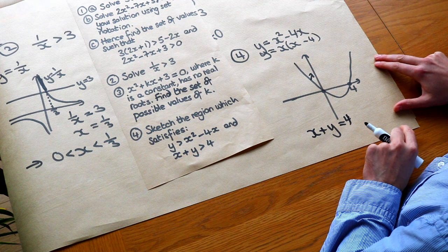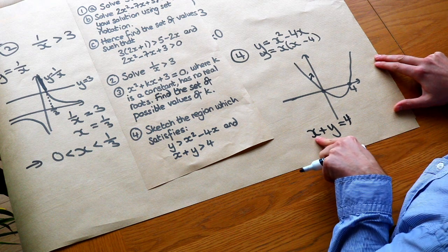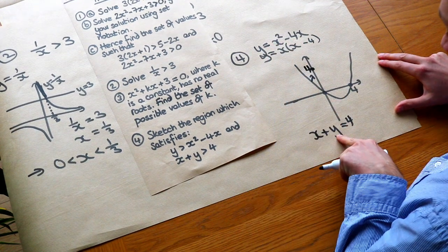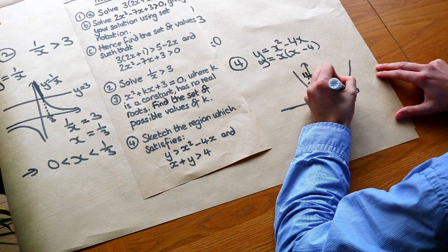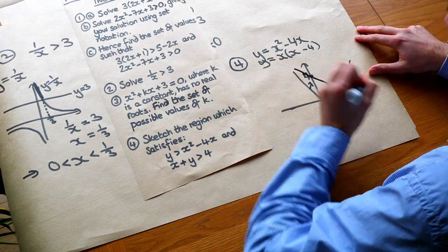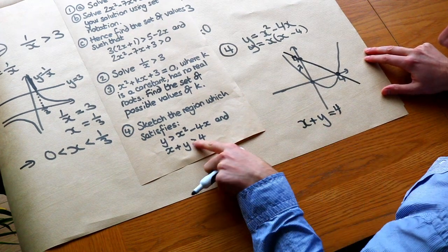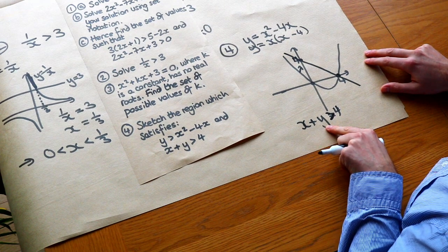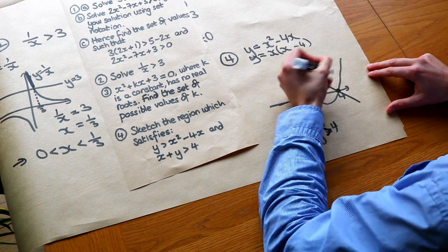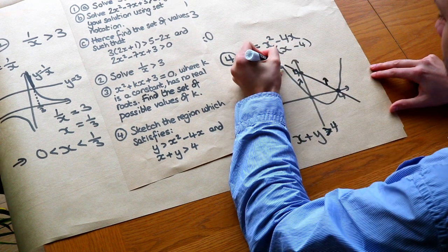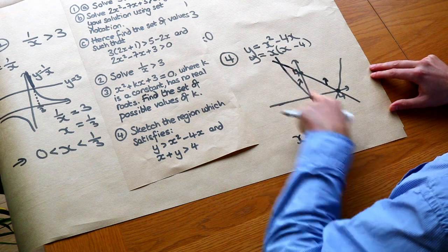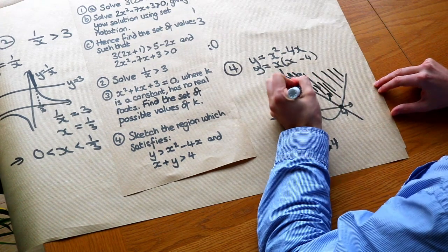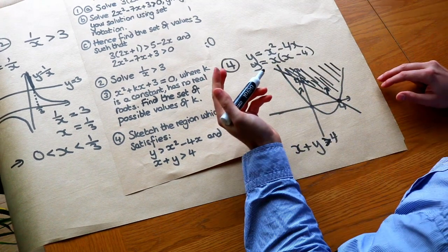For the second inequality, x + y > 4, we draw the line x + y = 4. Using intercepts: when x = 0, y = 4; when y = 0, x = 4. That gives us a straight line. Since y is on the bigger side of the inequality, we're again above the line. Combining both - above the parabola and above the straight line - the region satisfying both inequalities is the area above both curves, typically the region bound between them.